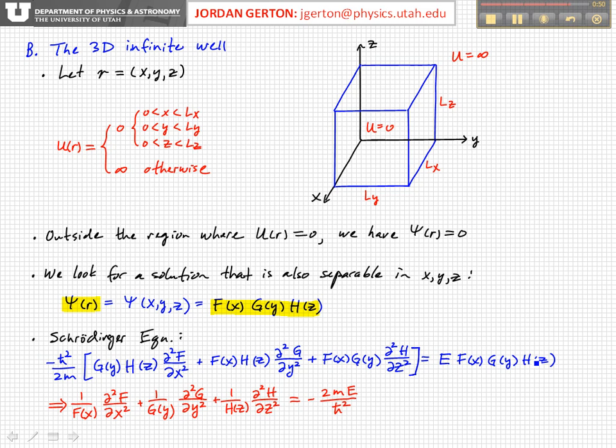We have an operator operating on a function gives us a number times that function. So, we can rewrite this equation that's in blue. The equation that's in red is this one rewritten, where we've now divided both left and right-hand sides by minus H bar squared over 2M, and also by psi, which is, again, F, G, H. And when you do that, you're left with this equation here: 1 over F of X times D squared F, D X squared, plus 1 over G of Y times D squared G, D Y squared, plus 1 over H of Z times D squared H, D Z squared, is equal to minus 2ME over H bar squared. The right-hand side is a constant, and each of the terms in the left-hand side depends only on one variable, and so they also must be equal to, each of them equal to a constant.